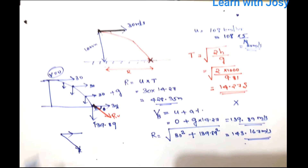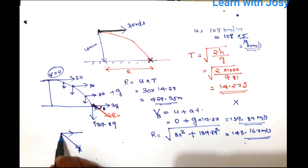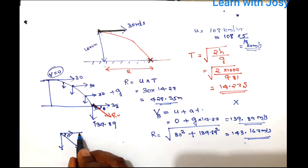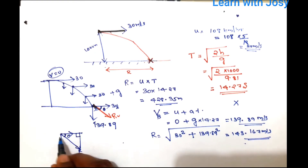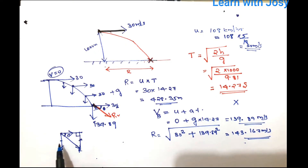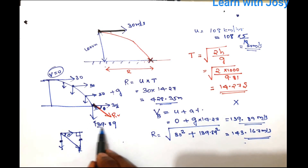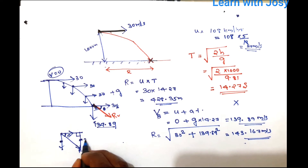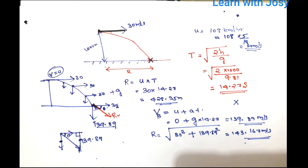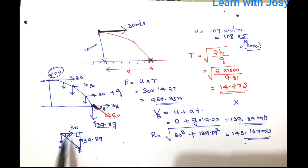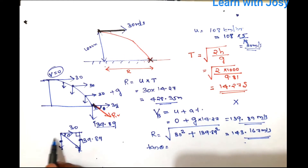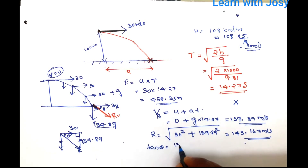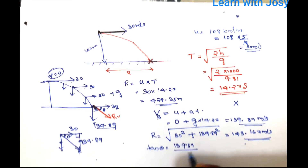The resultant velocity has a horizontal component and a vertical component. Using this right triangle, tan θ = vertical velocity / horizontal velocity = 139.89 / 30.